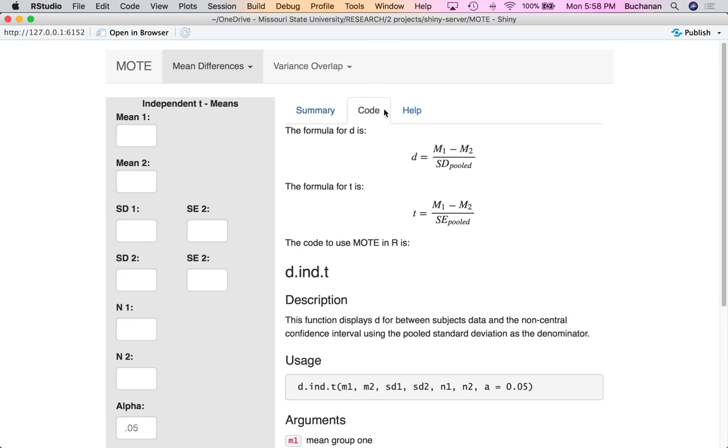So I'm going to flip over here and look at the code. What happens is that's calculated by taking the mean for group one minus group two and divide that by the standard deviations pooled. And the pooled standard deviation is sort of a weighted average of the two different groups' standard deviations. And then the formula for t is mean minus mean over the standard error pooled. If you want to use this in mode and type it in directly, you would use d.ind.t.